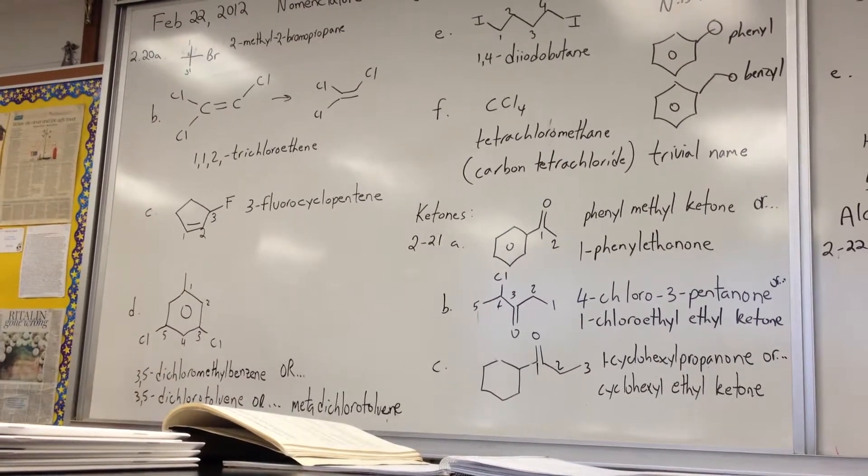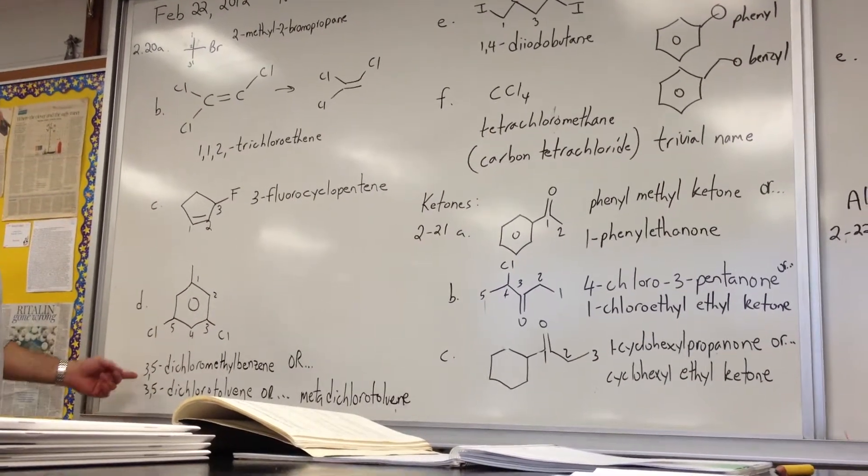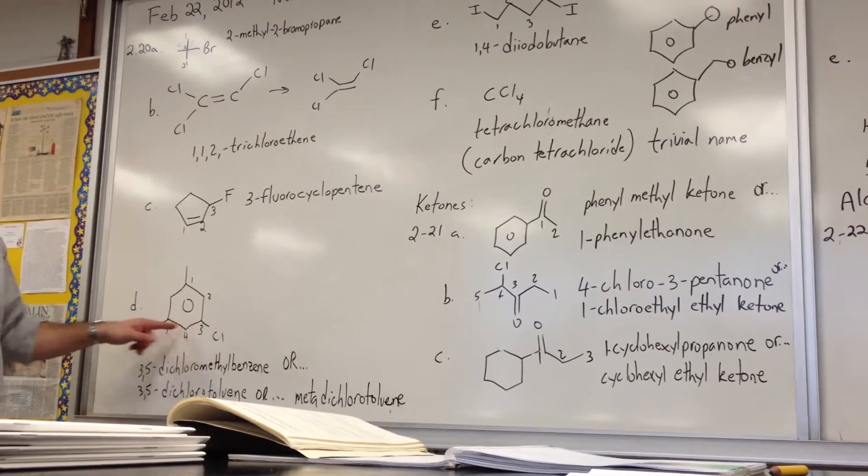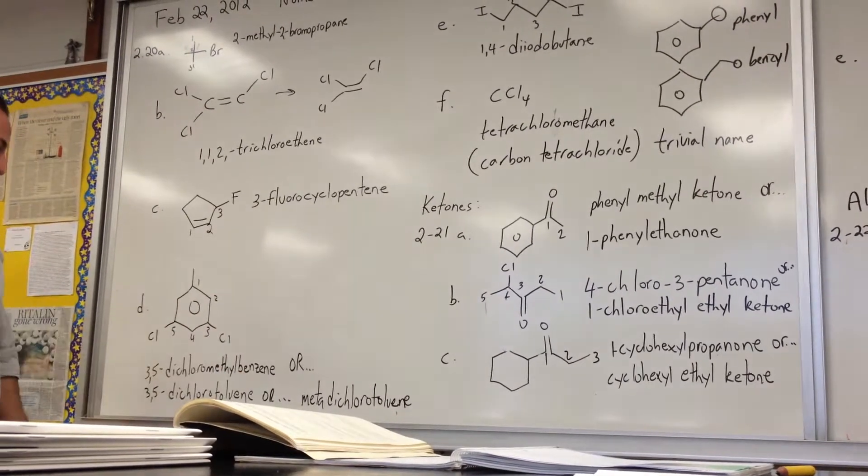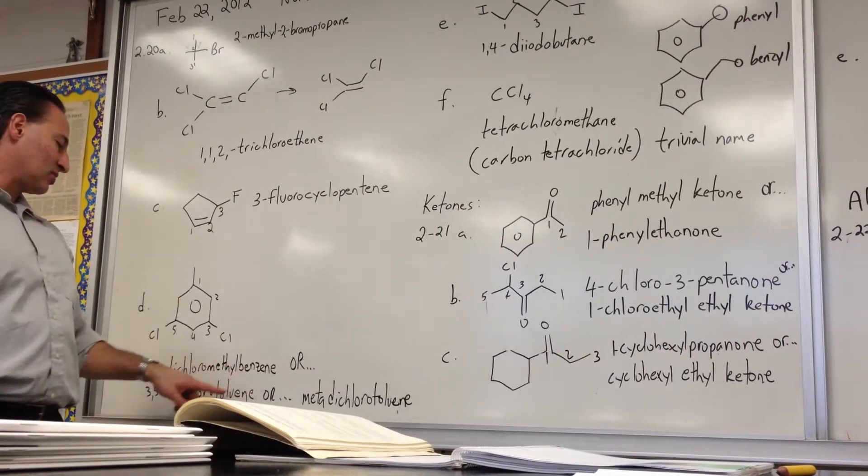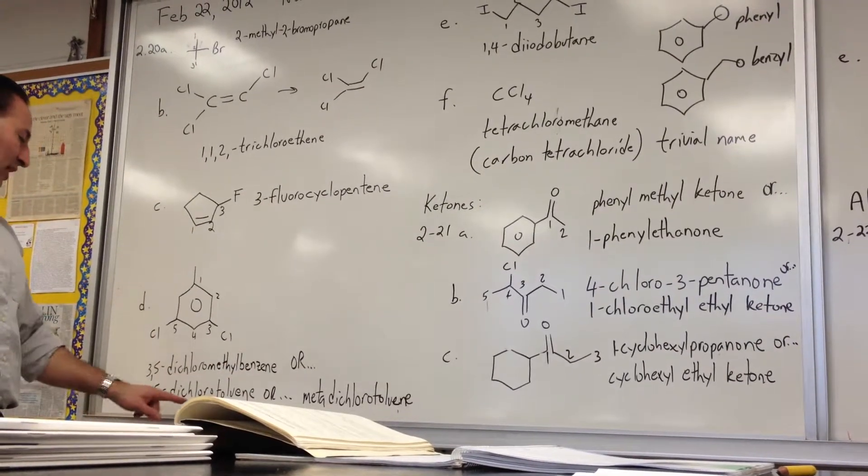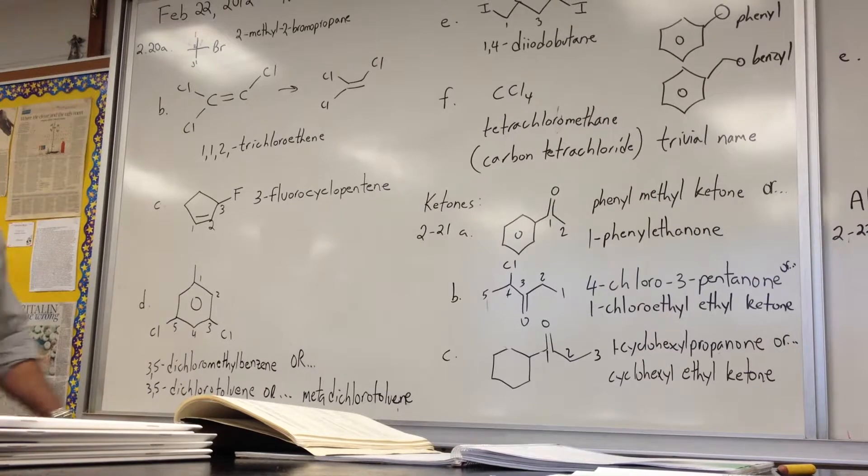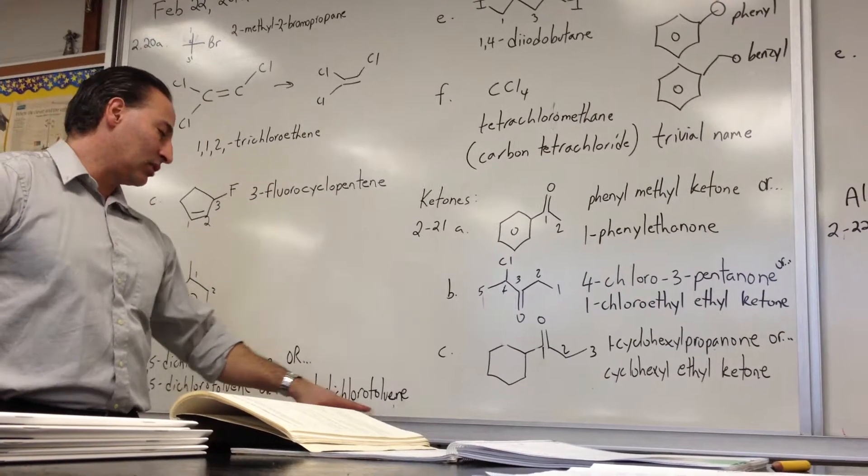So you see there's two ways to name this. Well, actually, three ways to name this molecule. You can name it 3,5-dichloromethylbenzene. But because methylbenzene is also known as toluene, you can also call it 3,5-dichlorotoluene. Or you could even call it meta-dichlorotoluene.